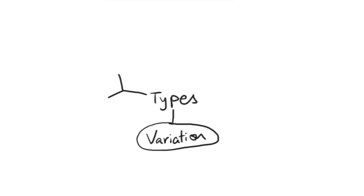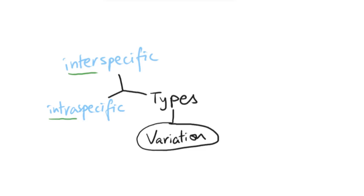There are different ways to consider different types of variation. We can think about variation between or within the same species — two types: interspecific and intraspecific. Notice the prefix inter and intra. Inter means between, specific means species. So interspecific variation refers to the variation or differences you will see between different species, whereas intraspecific variation refers to differences you will see within a species.